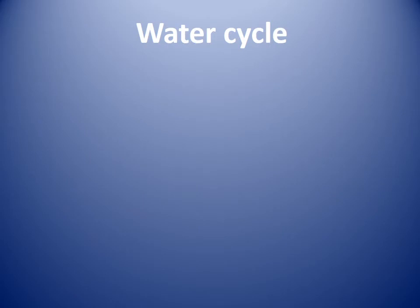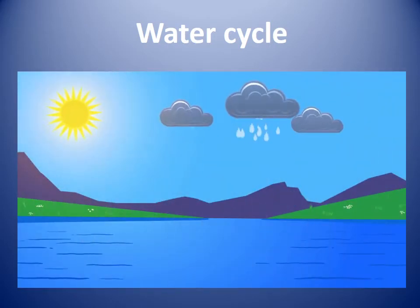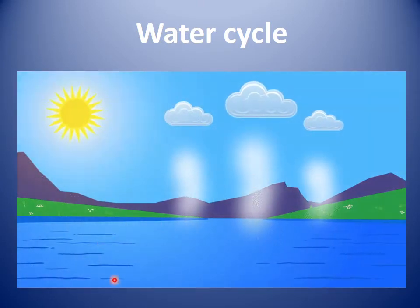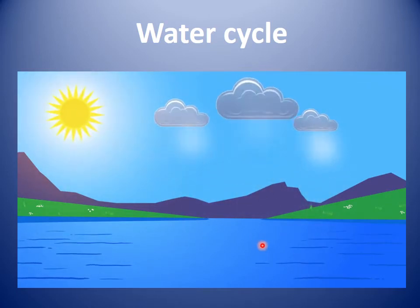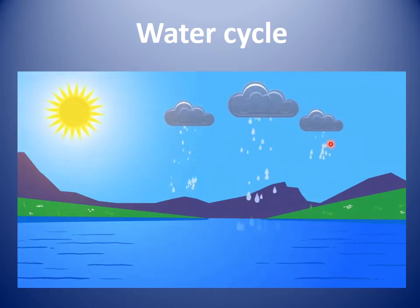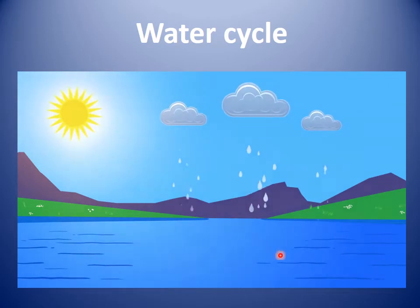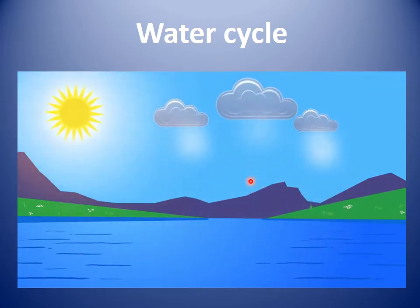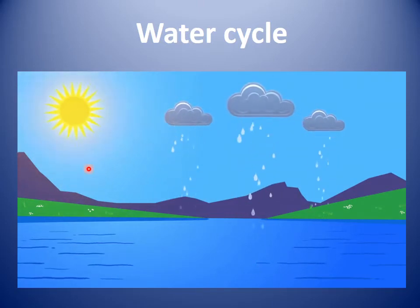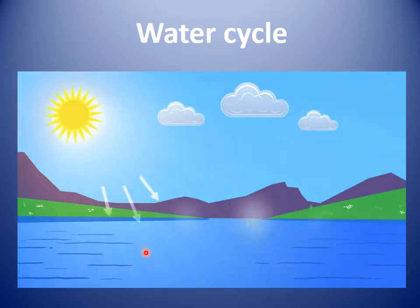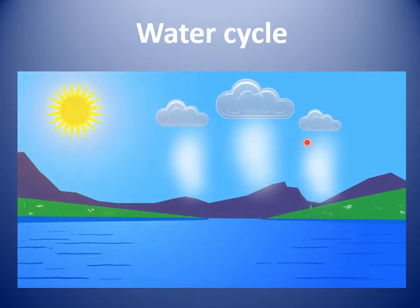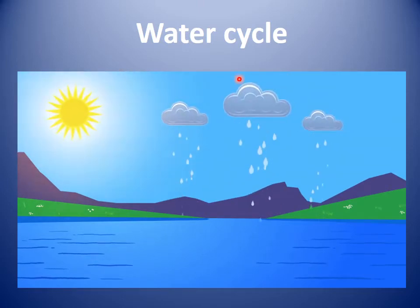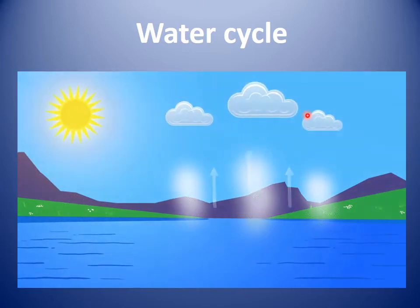Now let's know what is the water cycle. As shown in this figure, when the sun rays fall on the water — as a river or as the sea — the water begins to evaporate and turns to clouds. We call this evaporation. So the water cycle begins with evaporation. When we have many clouds, this is called condensation.